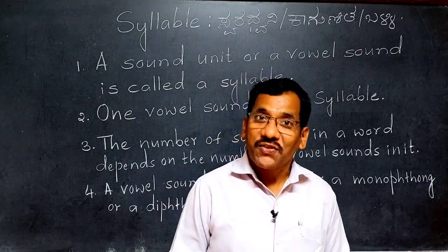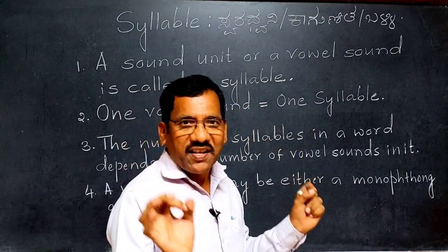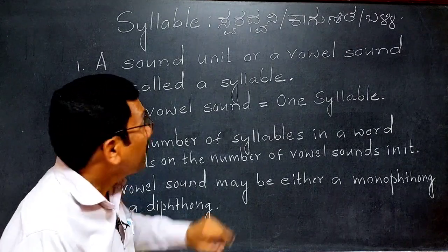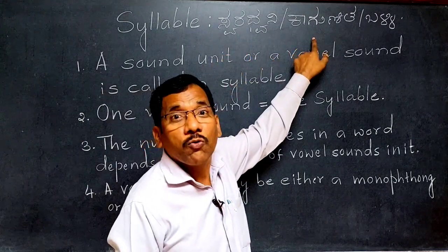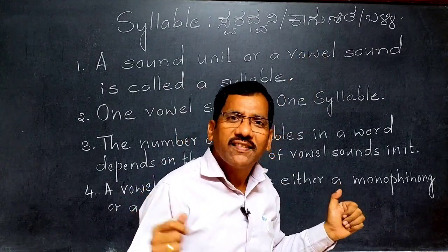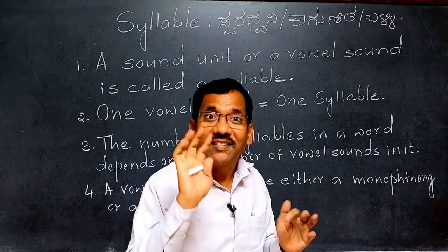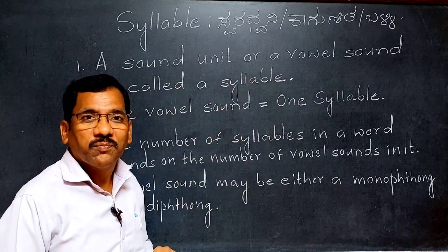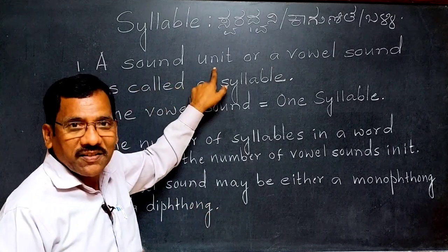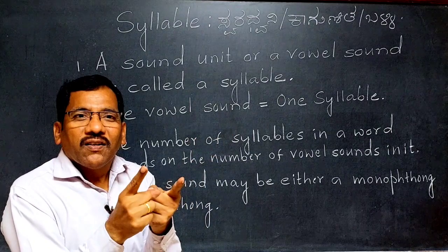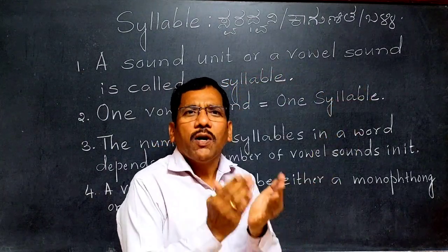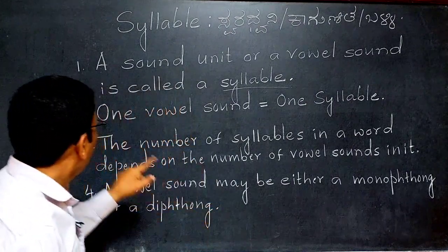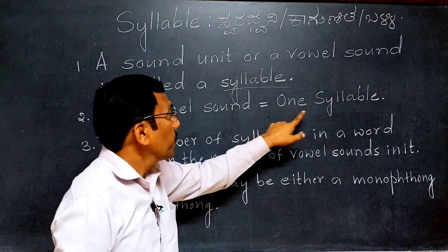Hello, friends. I am your teacher. Now I am going to discuss one easy, interesting and very useful topic in English — that is syllable. Syllable means 'swaradhvani.' A sound unit or a vowel sound is called a syllable. One vowel sound is equal to one syllable.